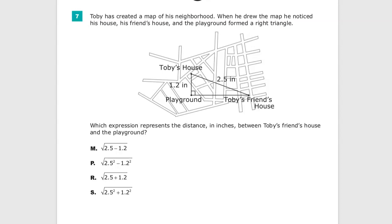Toby has created a map of his neighborhood. When he drew the map, he noticed his house, his friend's house, and the playground formed a right triangle, because that's what you do in your free time. You go to your room, draw maps of your neighborhood, and then look for representative shapes. Everybody does it. We all know it. So Toby's being awesome here.